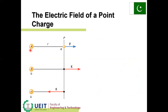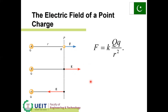Electric field of a point charge: Q is the source charge and small q is the test point charge. R is the distance between charge Q and small q. F is the force at point P. Electric intensity E is defined at point P. If the charges are reversed and Q becomes negative, the electric field intensity direction is reversed. The Coulomb force is equal to K times Q times q over R squared. Therefore E equals F over q equals K times Q over R squared.